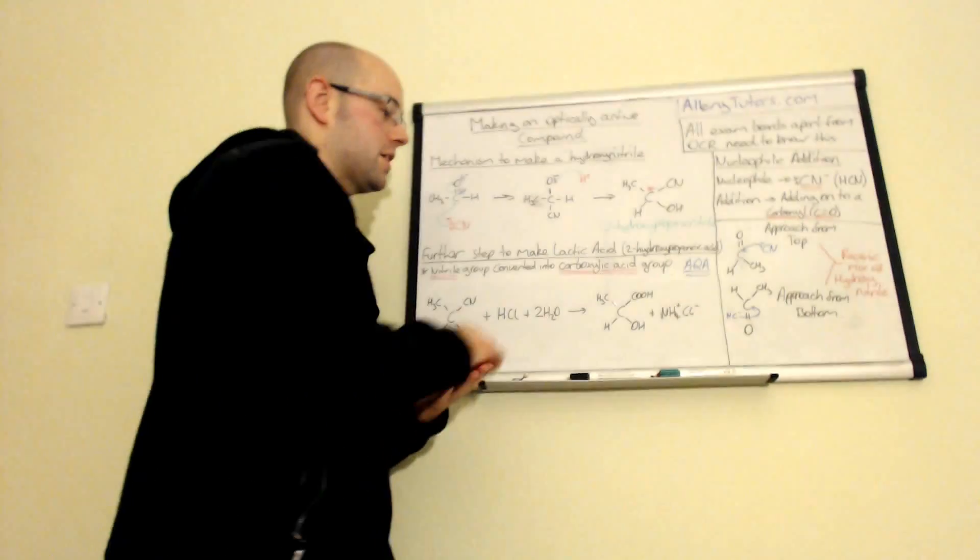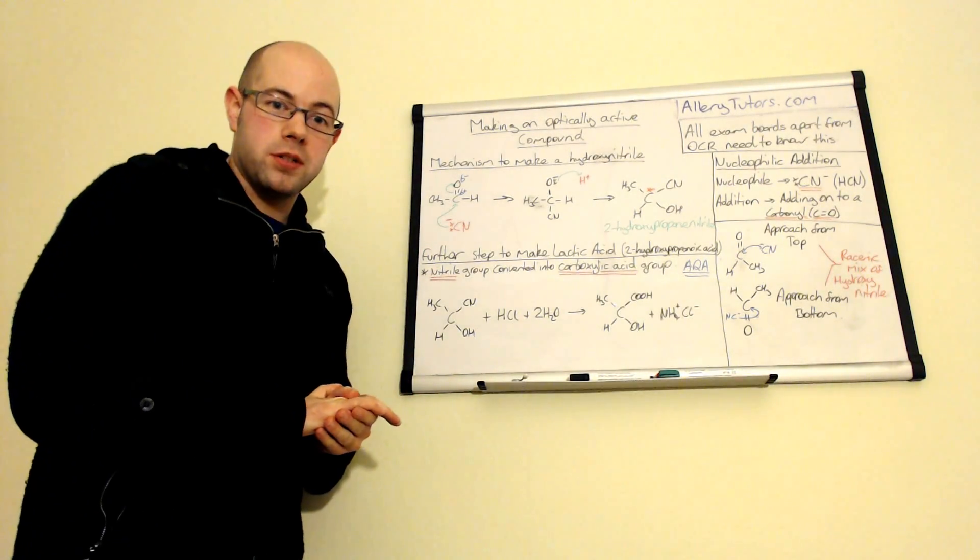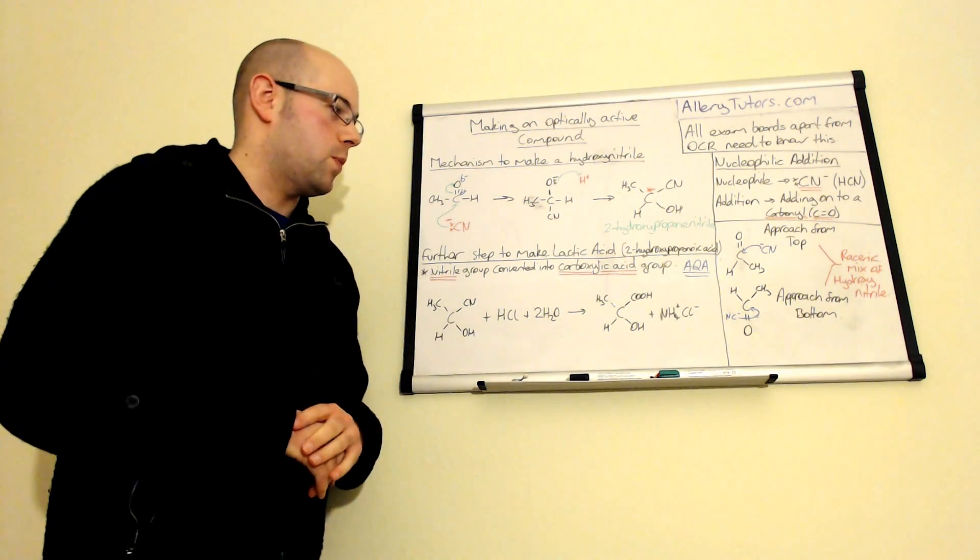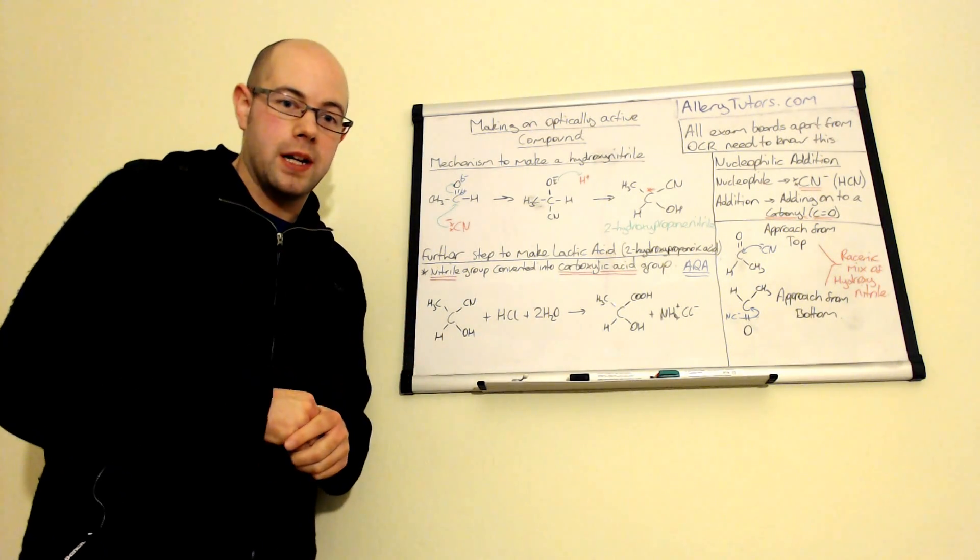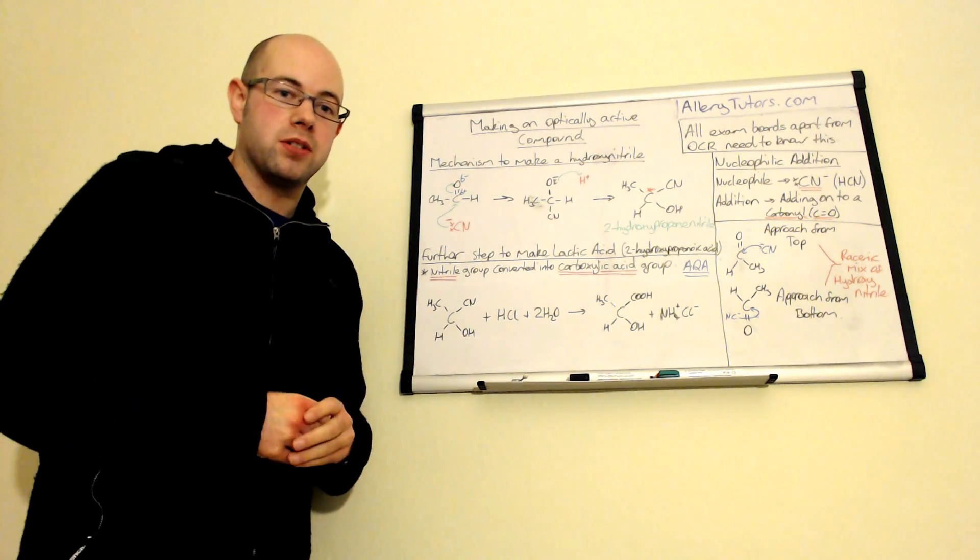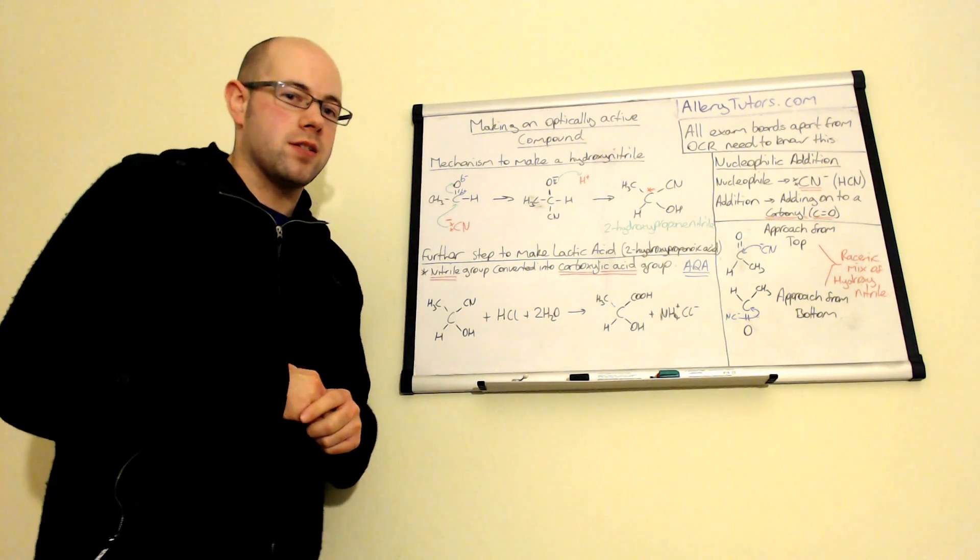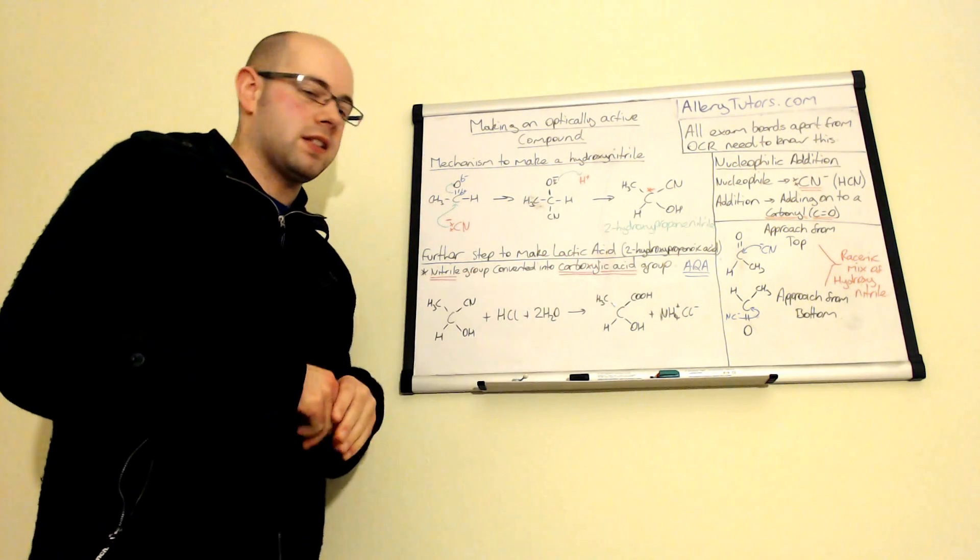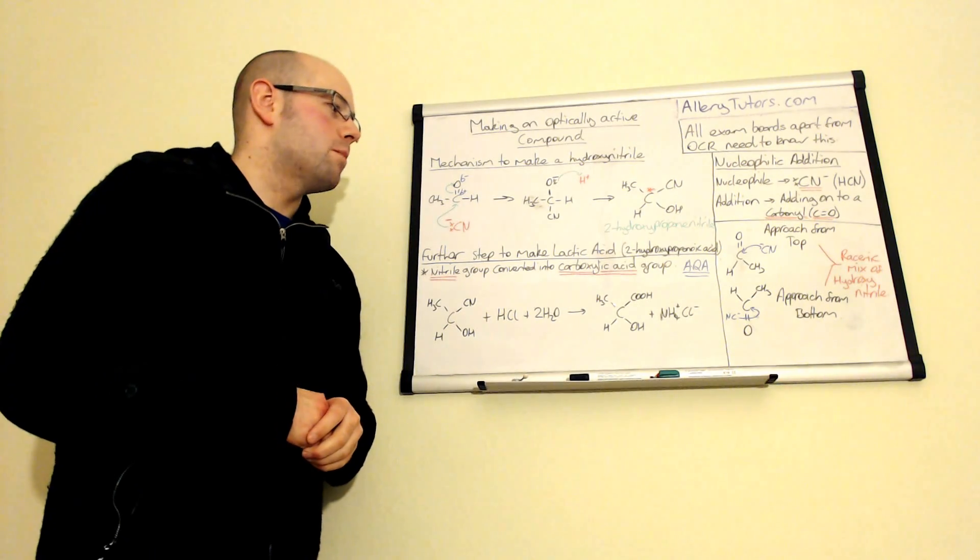So lactic acid is normally what's produced in your muscles by your cells when you respire anaerobically. And you get that pain in the muscles, or you get that metallic taste that you taste in your tongue. And that is because of this lactic acid molecule.